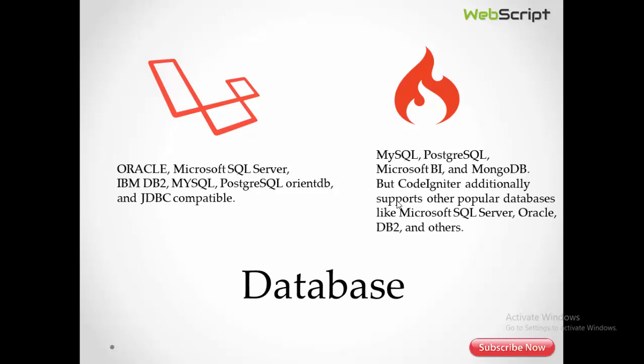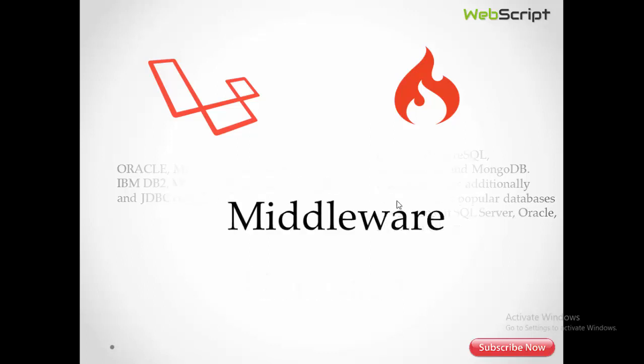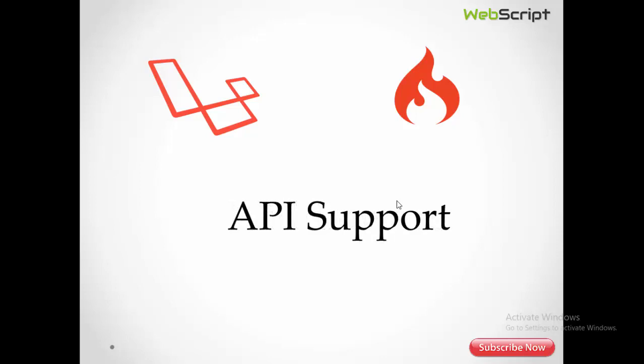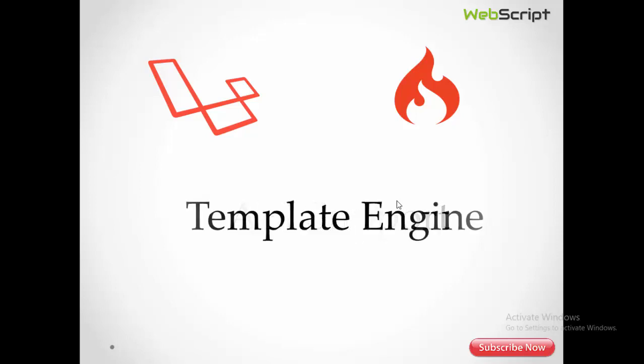There is a list of databases supported by both Laravel and CodeIgniter. One of the great features in Laravel is middleware, which CodeIgniter does not provide. Middleware is used to filter incoming HTTP requests. One predefined middleware in Laravel is the auth middleware, which validates whether a user is logged in or not. You can also create your own middleware to perform custom validation over HTTP requests.